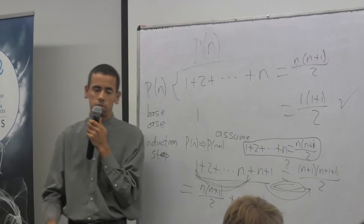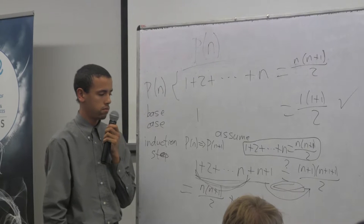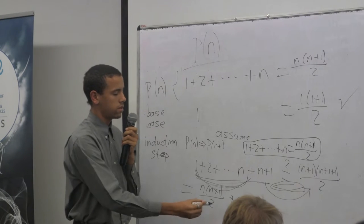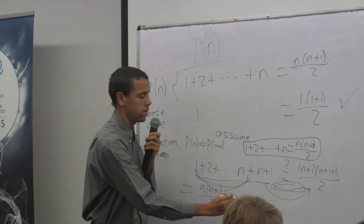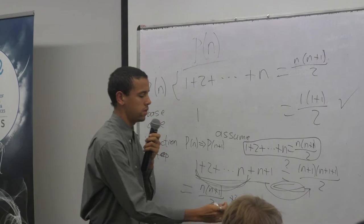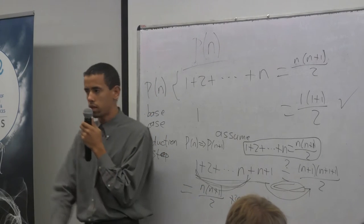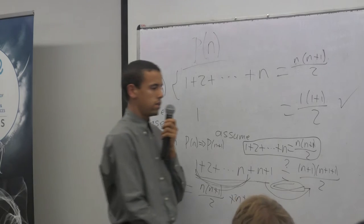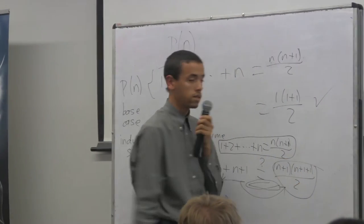Cool, and then it's simple algebra. You put that, so you make that 2n plus 2 over 2, you put it together, you take out the factor of n plus 1, and ta-da, you get that.